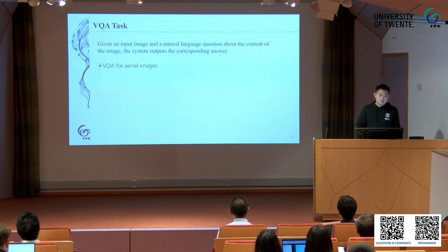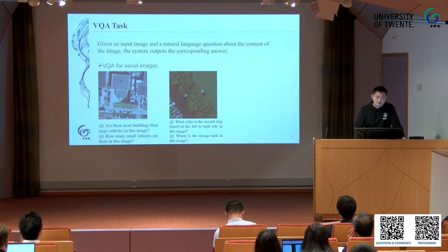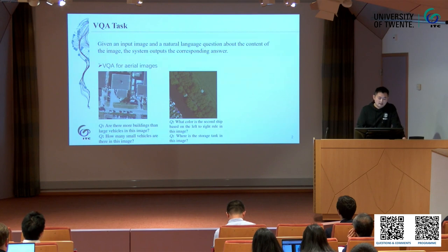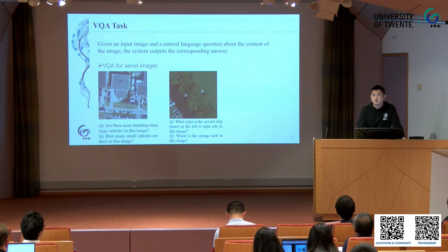So how about bringing this task to aerial images? What will this look like? Here are several examples of VQA for aerial images. For an aerial image, you can ask a question about the image content, like: 'Are there more buildings than vehicles in this image?' or 'Where is the storage tank in this image?' These are simple questions about the concepts or key objects in the images.